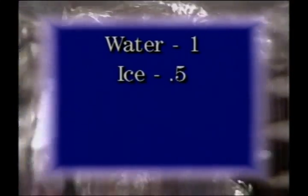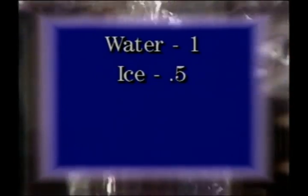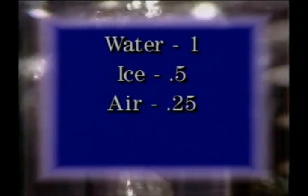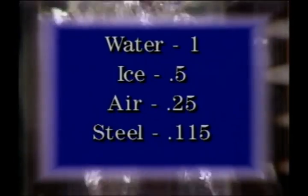Water is given a specific heat value of one — it takes one BTU to raise the temperature of one pound of water one degree Fahrenheit. Water is treated as a standard that other substances are compared to. For example, the specific heat of ice is 0.5, so it takes half as much heat to raise the temperature of ice as it does water. Air has a specific heat of 0.25, and steel has a specific heat of 0.115. Substances with lower specific heats require less heat to raise their temperature than substances with higher specific heats.